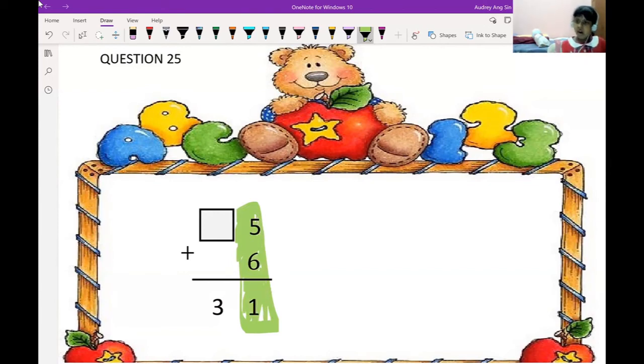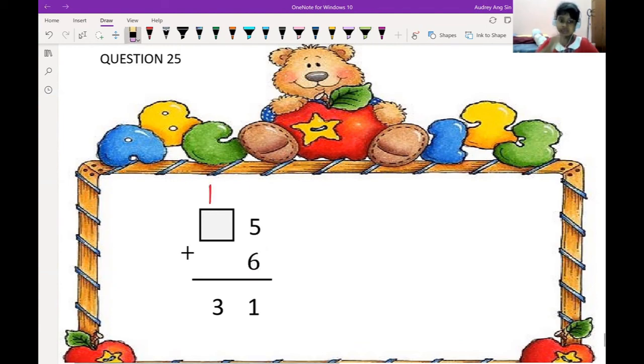How to do 5 plus 6? Give 5. After 6. Good. 7, 8, 9, 10, 11. 11. So 11 is 1, 1. Okay, 11 is 1, 1. So you see here, I have 1, 1. So now I will do the front one.